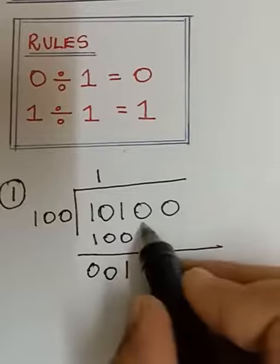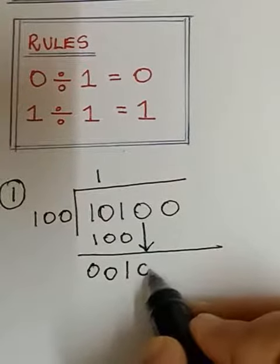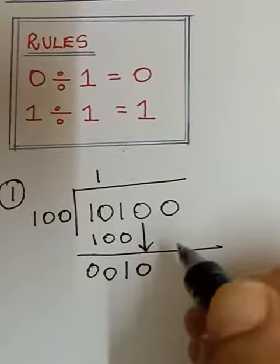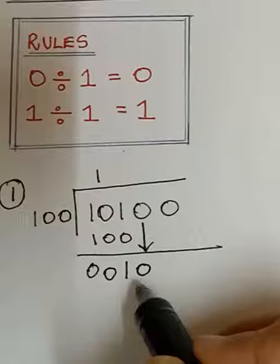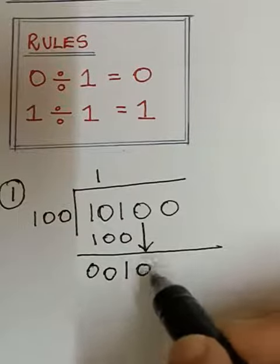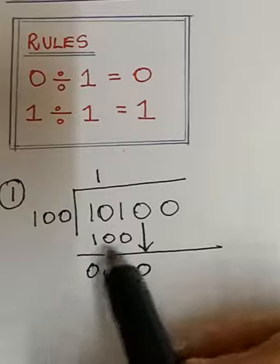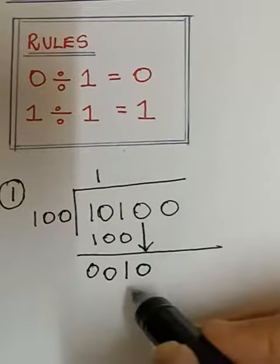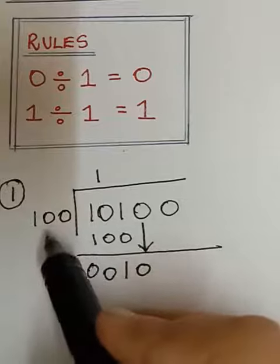Now we have to bring this 0 down as we do in normal decimal division. So after bringing this down we have to check whether this number is greater than or equal to 100. I mean 100. But if you see here it is only 10 which is lesser than 100.